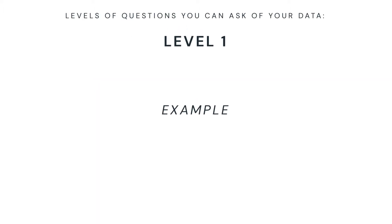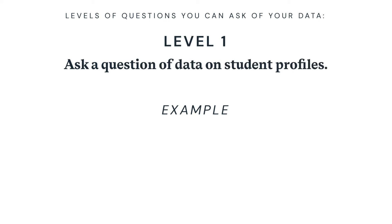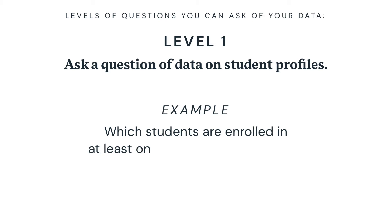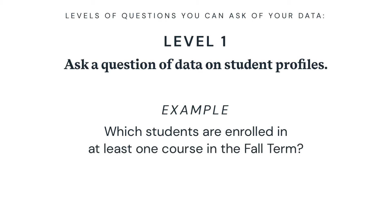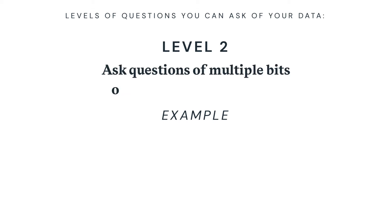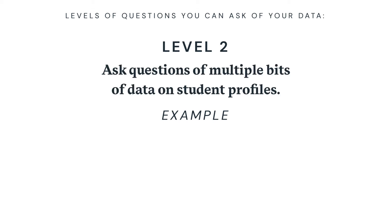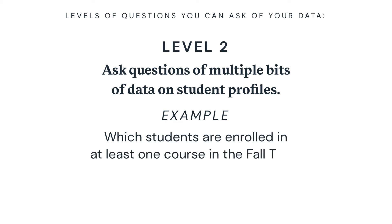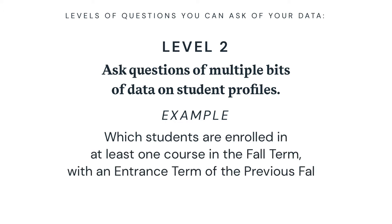Level one: ask a question of data on student profiles. For example, which students are enrolled in at least one course in the fall term? Level two: ask questions of multiple bits of data on student profiles. For example, which students are enrolled in at least one course in the fall term with an entrance term of the previous fall?